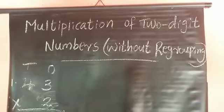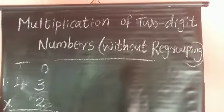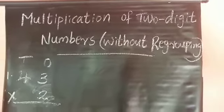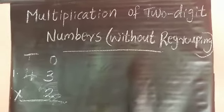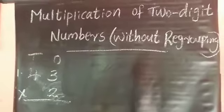Okay children, now we are going to learn about multiplication of a 2-digit number by a single-digit number without regrouping. Let's look at an example. First question: 43 multiply 2, that is 43 into 2. Here, 43 means 3 ones and 4 tens.